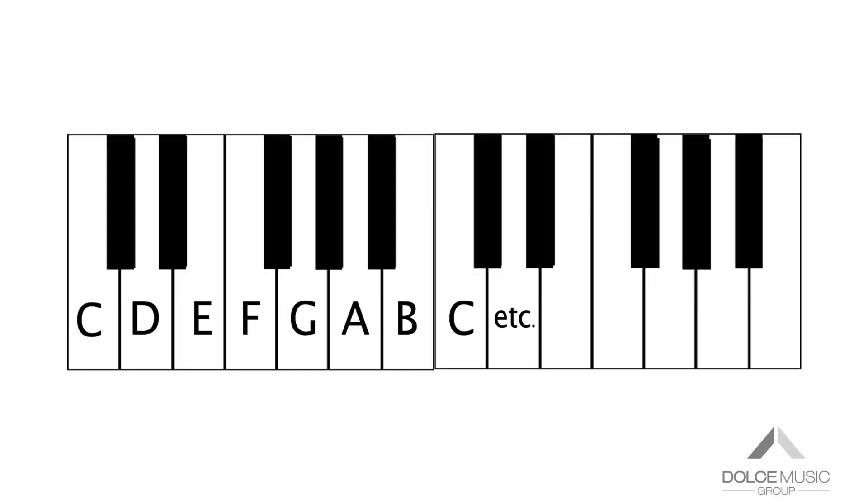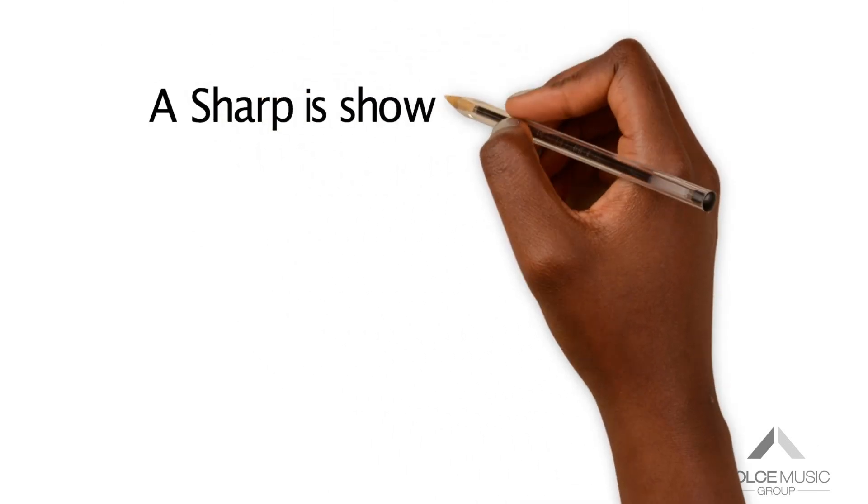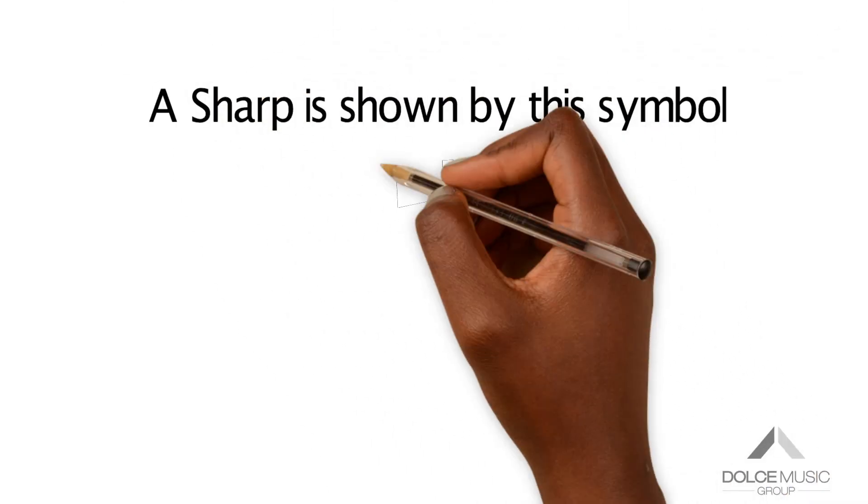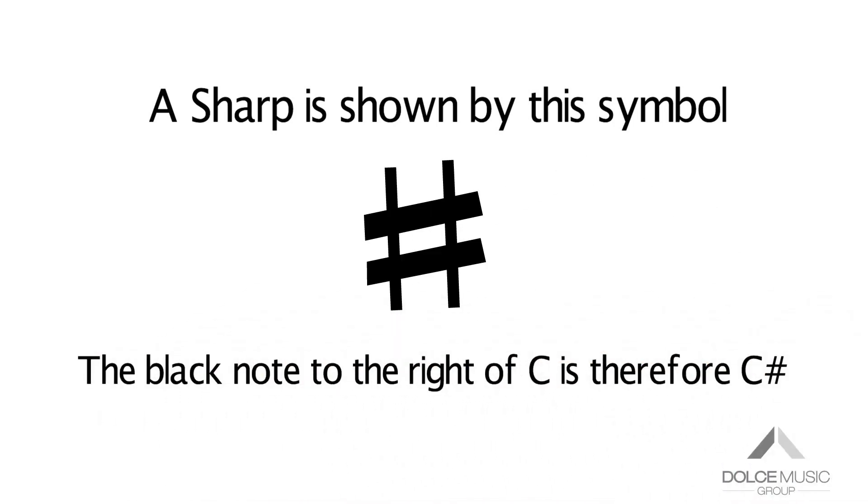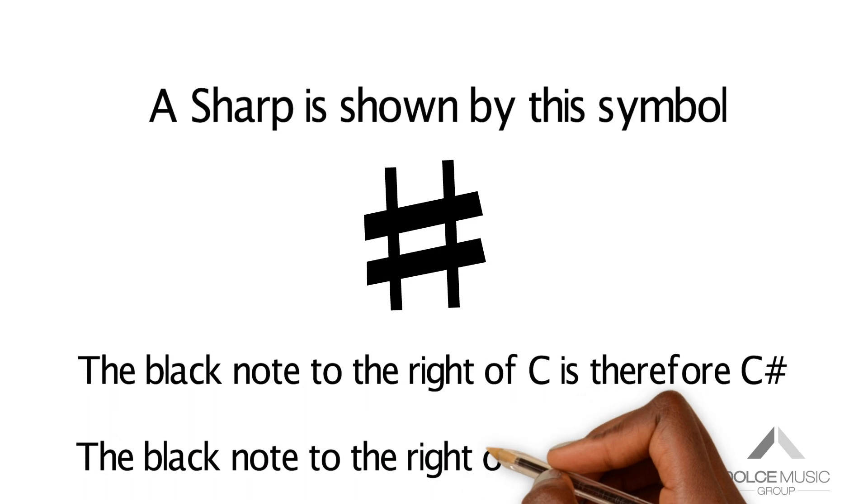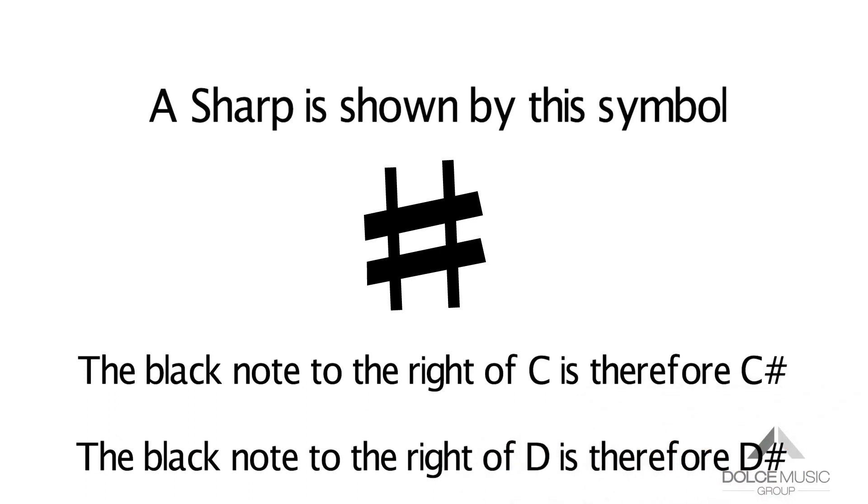Accidentals. The black notes on a keyboard take their names from the white notes. A black note to the right of a white note has the same letter name but with sharp added. The music sign for sharp is shown by this symbol. The black note to the right of C is therefore C sharp. The black note to the right of D is D sharp and so on.